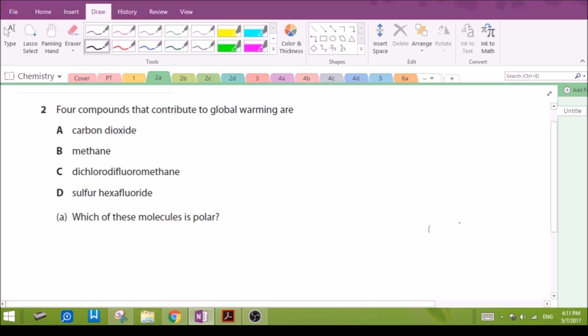Number 2: Four compounds that contribute to global warming - we have carbon dioxide, methane, dichlorodifluoromethane, and sulfur hexafluoride. Which of these molecules is polar? It might be useful to know the geometrical shape of the molecules. So carbon dioxide CO2 is linear, two bond pairs zero lone pairs, so it's linear. Although the bonds are polar, because it's linear the polar bonds cancel each other out, so overall it is non-polar.